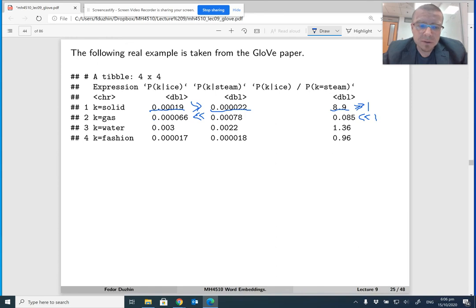If we look at the third row of the table, then we see that the word water appears quite frequently in the context of the word ice and in the context of the word steam. Both numbers are, well, they're kind of close to each other and they're large. Well, as compared to generally small numbers here, these two numbers are large. This is because, well, water is related to both ice and steam, right? So, because water can be ice and water can be gaseous when it is steam.